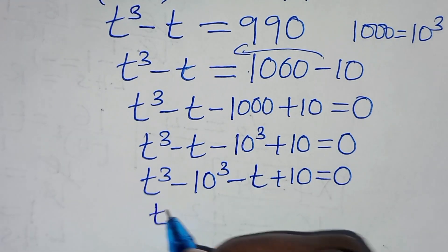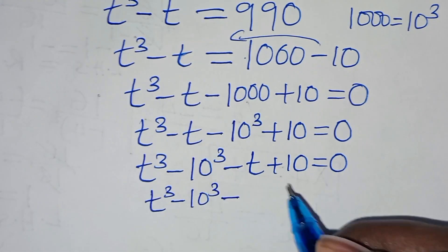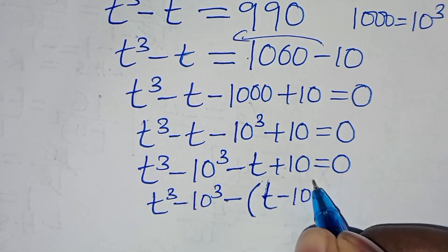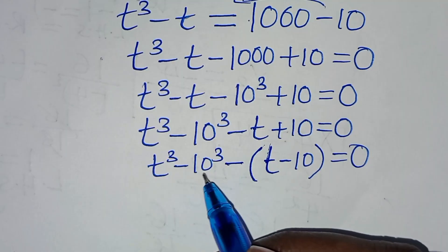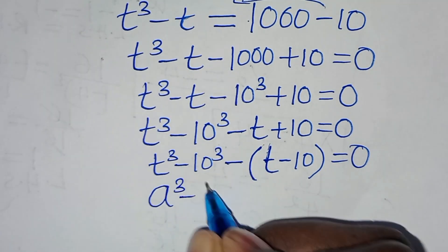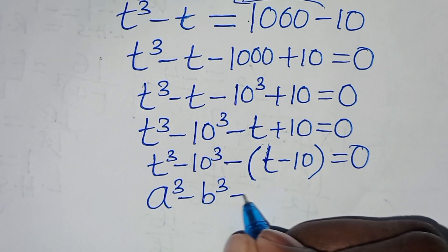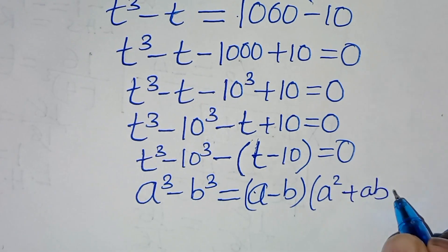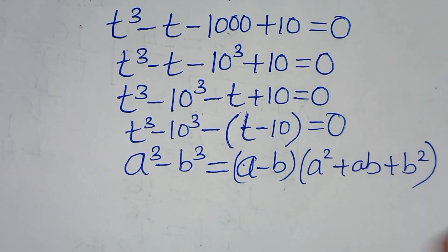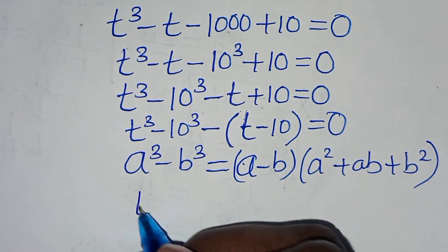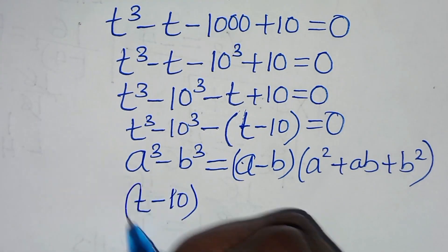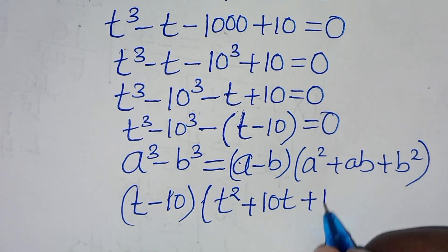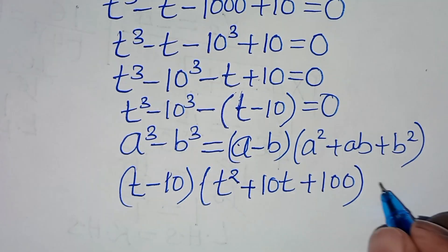Now, t³ − 10³ is in the form of the difference of two cubes: a³ − b³ = (a − b)(a² + ab + b²). Applying this identity, t³ − 10³ = (t − 10)(t² + 10t + 100). So the full expression becomes (t − 10)(t² + 10t + 100) − (t − 10) = 0. Let's call this equation 1.